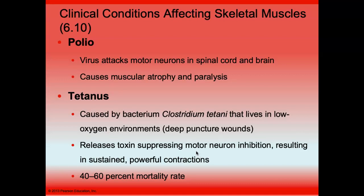Tetanus is caused by Clostridium tetani, bacteria that live in soils everywhere. They produce spores that can enter our body through a deep puncture wound. If the spore produces bacteria, it releases a toxin that suppresses motor neuron inhibition — meaning the motor neuron continues to stimulate the muscle — resulting in sustained, terribly powerful contractions with a very high mortality rate.